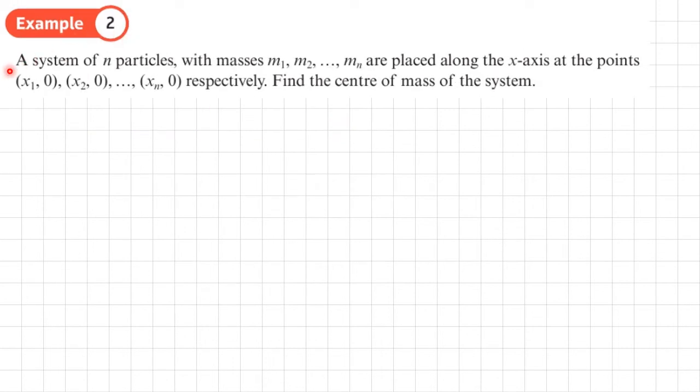Example two. A system of n particles with masses M1, M2, all the way to Mn are placed along the x axis at points (x1,0), (x2,0), and so on up to (xn,0), respectively. Find the center of mass of the system. So the first thing I'm going to do is a diagram. I'll have my origin here, and I'll put some of these masses on and then I'll just do a dotted line to say there's going to be lots of other masses until I get to my very last mass here.